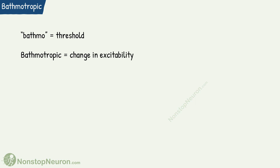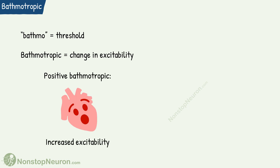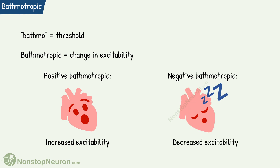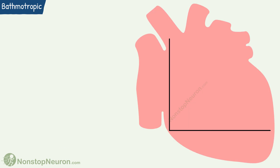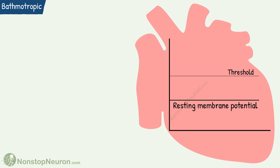Now the final one: bathomotropic actions. Bathomo means threshold — here it's the threshold for action potential that we are talking about. Bathomotropic action means changes in the excitability of cardiac muscles. Positive bathomotropic means an increase in excitability, and negative bathomotropic means decreased excitability. The excitability depends on the resting membrane potential — the closer it is to the threshold, the easier it is to reach it and get excited. The bathomotropic effects are produced by altering the resting membrane potential.